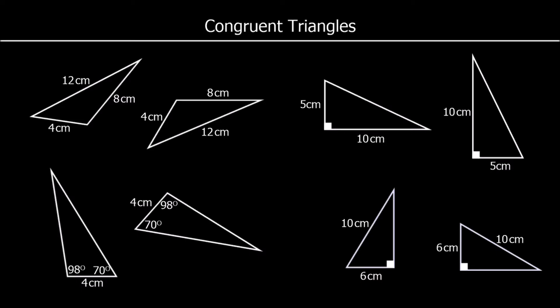If two triangles are congruent, that means they are exactly the same — they are identical. There are four rules that we need to know, four things we need to look out for to check if we have congruent triangles.